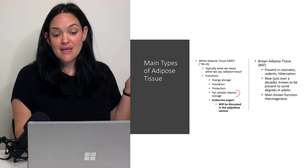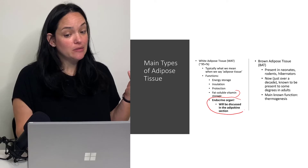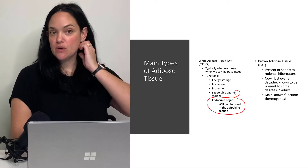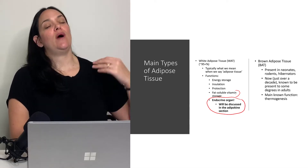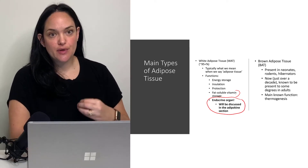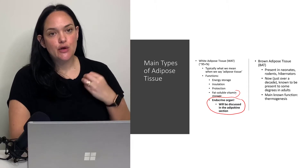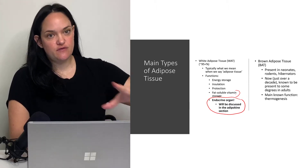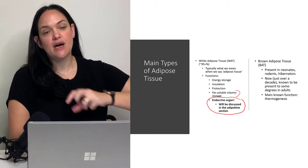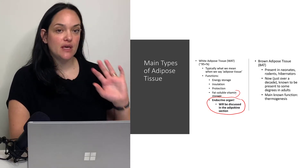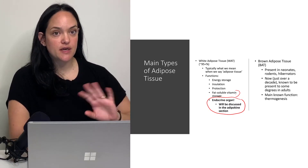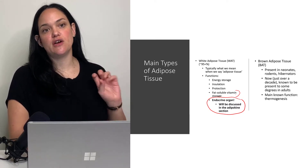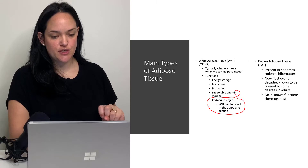Something we really only learned about a few decades ago is that white adipose tissue is also an endocrine organ. It secretes various factors specifically called adipokines, which communicate with the rest of the body. We'll talk about that more when we discuss the physiology of white adipose tissue.